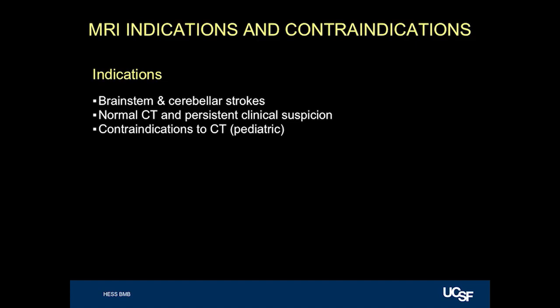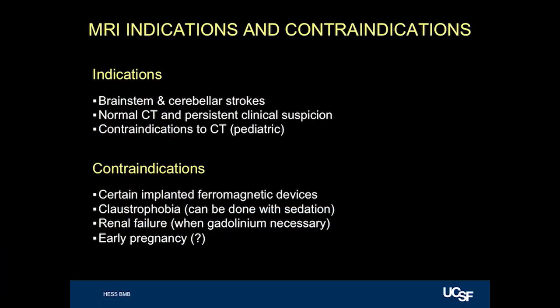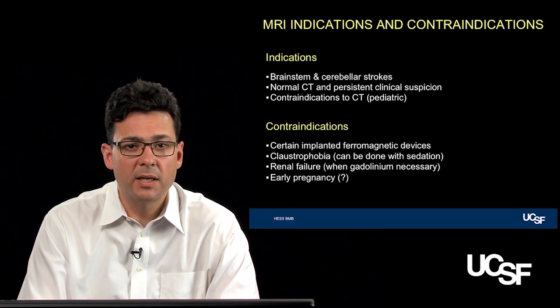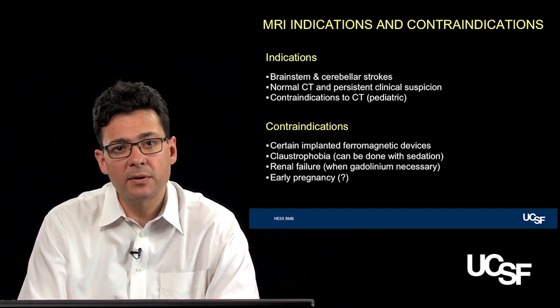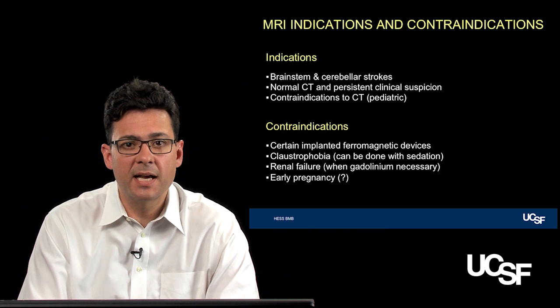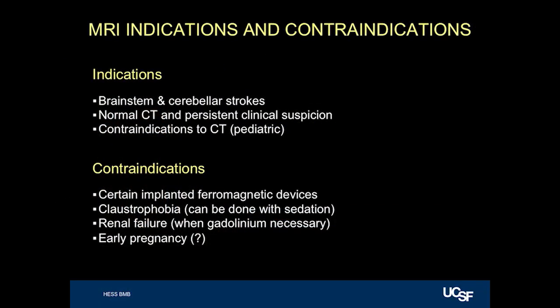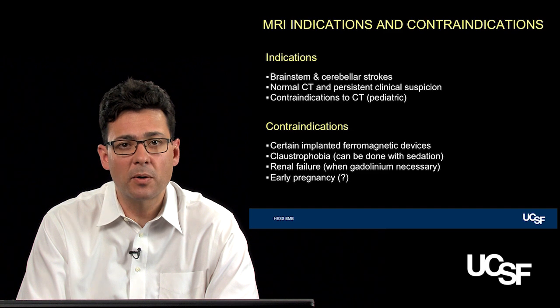As mentioned, certain patients may have contraindications to CT, and in pediatric patients it's best practice to start with MRI. MRI contraindications include certain implanted devices that can be moved by the magnetic field — while a normal hip or knee prosthesis is not a problem, old aneurysm clips and metallic fragments in the eye can move in an MRI and cause considerable damage. Extremely claustrophobic patients who can't lie still for 30 to 45 minutes are not eligible. If gadolinium is needed and a patient has renal failure, MRI should not be performed. There is also debate about early pregnancy — it's probably best practice not to administer gadolinium, or even perform MRI, early in pregnancy.